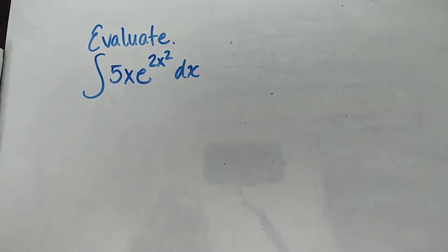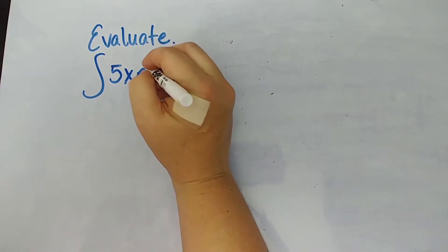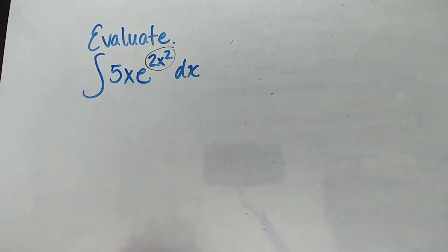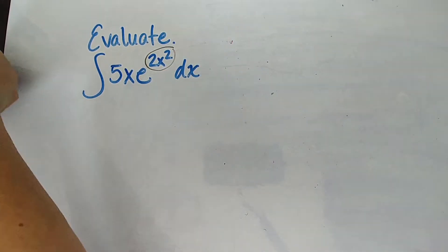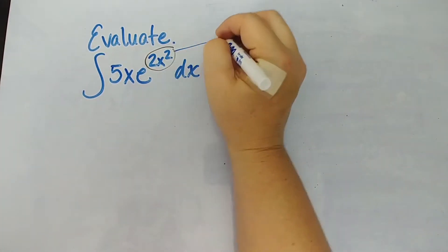But this is a little different. When you see an integral and it's got e to the x but anytime e is not to just the x, if there's something more up there you are likely going to be using u substitution.